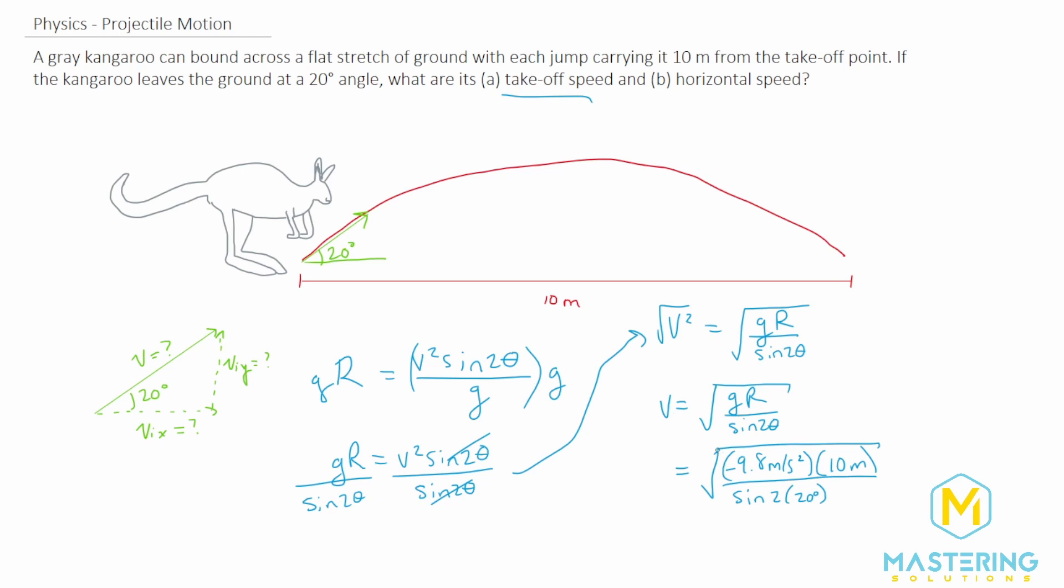But now just looking at this, one problem that this would give us is since we have a negative in here, we can't take the square root of a negative value. The calculator will give you an error domain. So what we need to do is just use positive g, and then this will now give us the correct answer.